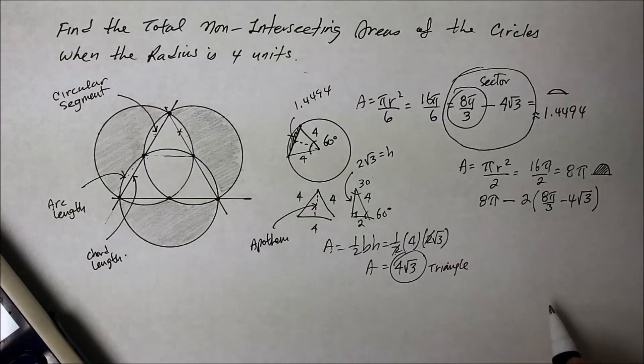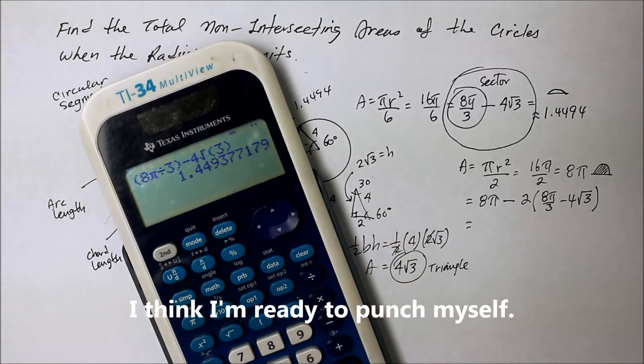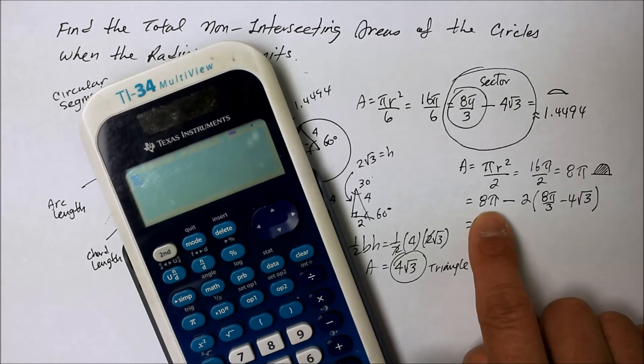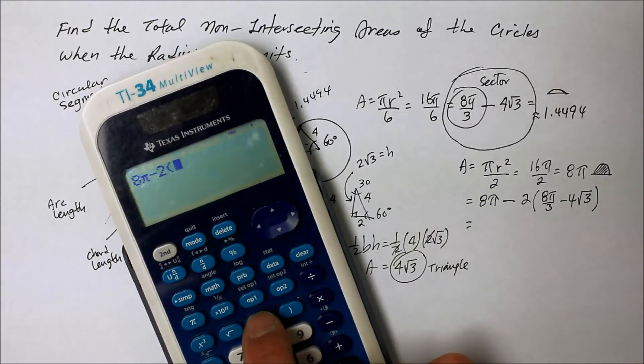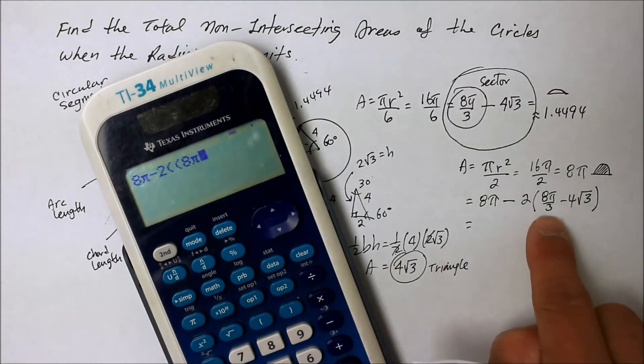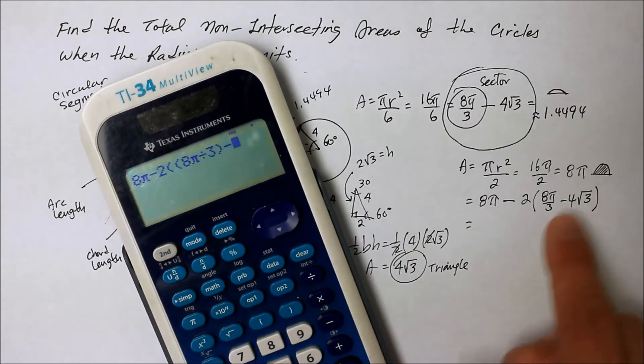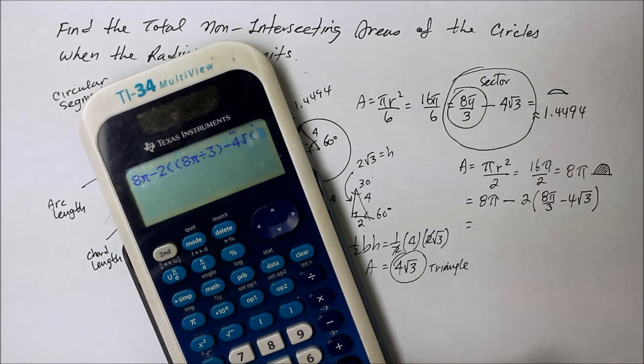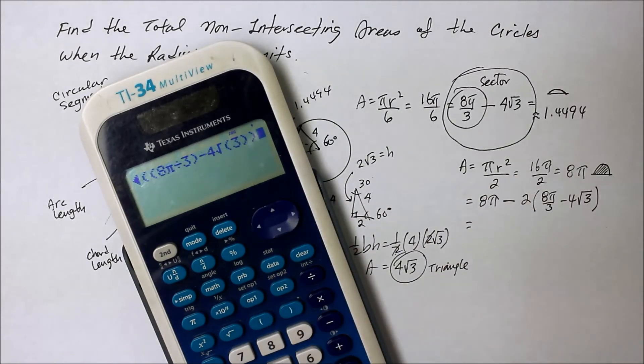All right. So now I'm going to punch the whole thing in a calculator. Let's see if this guy can handle this without blowing up. Here we go. And make sure I punch in the correct keys. 8 pi. So far so good. Minus twice. Here comes the parentheses. But I'm going to put a parentheses around that too. 8 pi. Close that parentheses. Oh. Divided by 3. Close that expression out. Minus 4 square root of 3. Close that little guy. And then close up the whole thing. And let's see what happens.